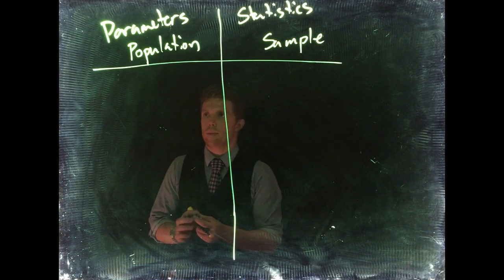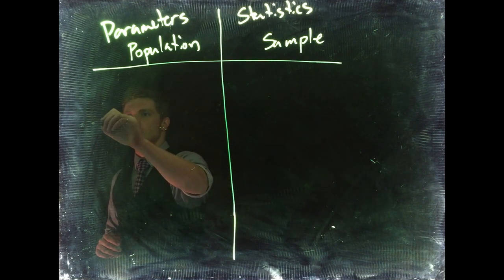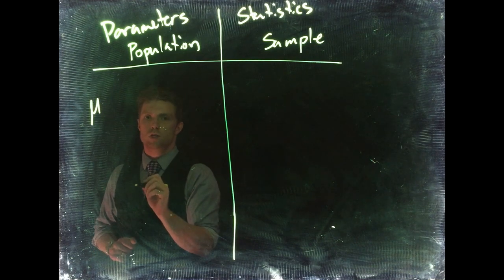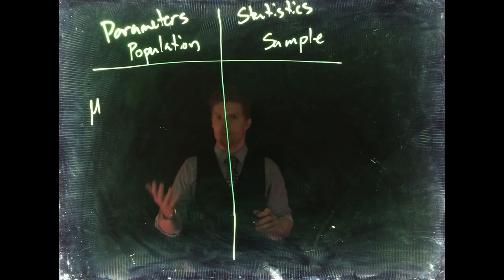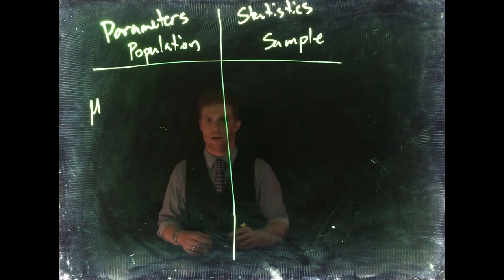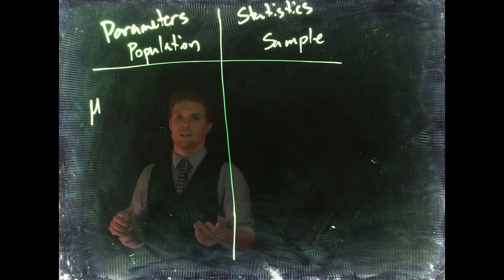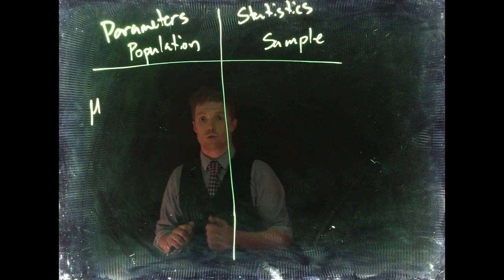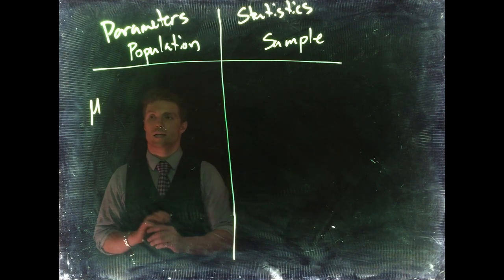When we talk about the mean for the population, we're talking about mu (μ), the population mean - the true mean value of whatever we're measuring in the population. If we're measuring tree heights on Casper Mountain, that would be the true average height of all the trees on Casper Mountain.